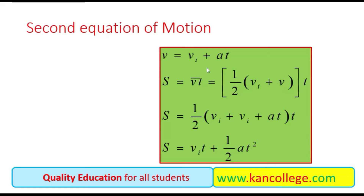By putting the value of final velocity from the first equation of motion, this becomes (Vi + Vi + At) / 2, which gives 2Vi + At divided by 2. Multiplying by T, it becomes Vi·t plus one-half acceleration times T squared. This is how the second equation of motion is derived.